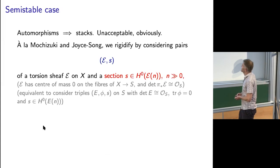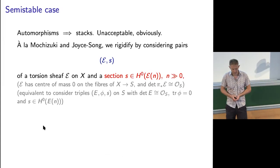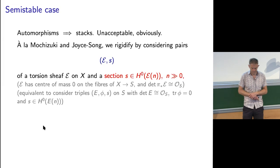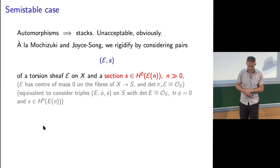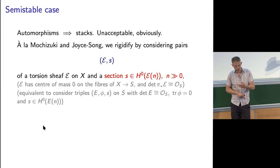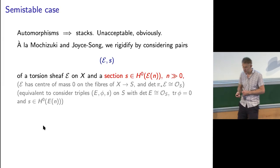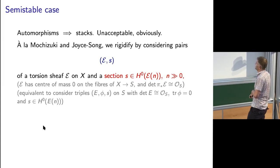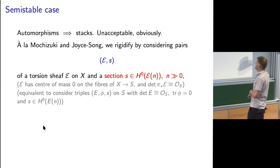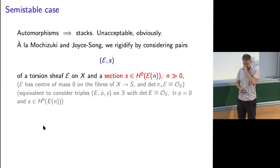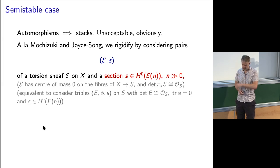We rigidify the stacks by considering instead pairs — the sheaf on the threefold, which is a torsion sheaf supported on a surface in the threefold, the spectral surface. We pick a section of a very positive twist of the sheaf so that there's no higher cohomology. That's this twist by N: we fix a very large N so that none of the sheaves in our moduli space have higher cohomology when twisted by N.